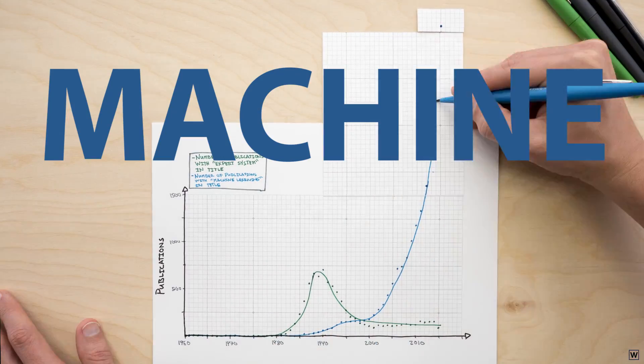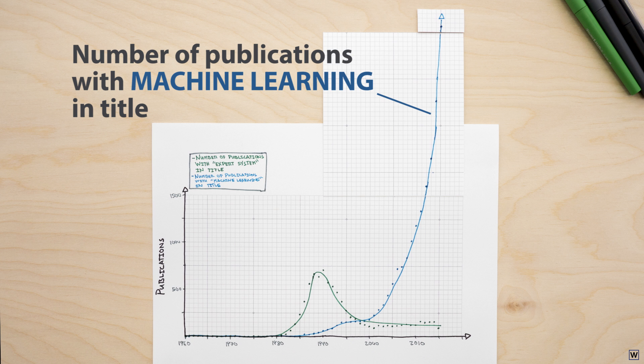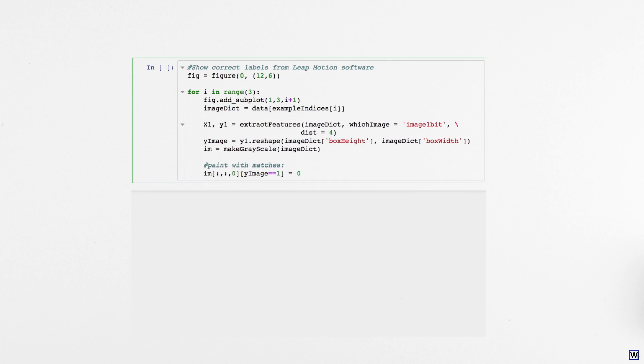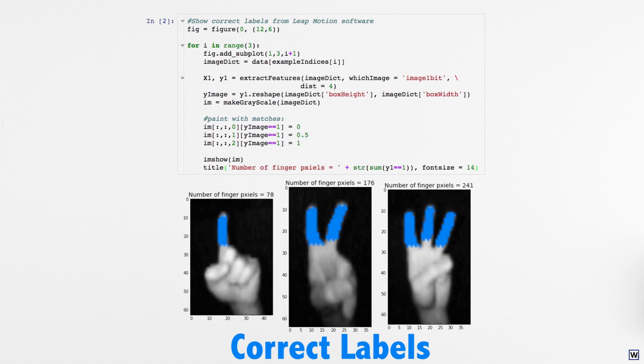Samuel's approach is called machine learning, and it's going to help us find a better solution to our finger counting problem. Thanks to our labeling back in part 2, we have lots of examples of fingers and non-fingers. Machine learning says that instead of writing our own rules, we should instead write a program that learns rules from our examples.